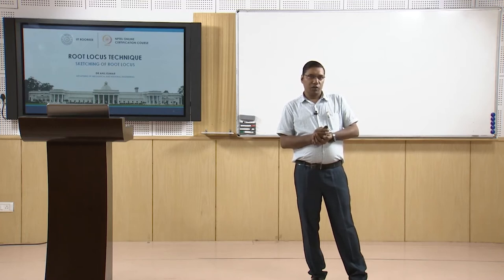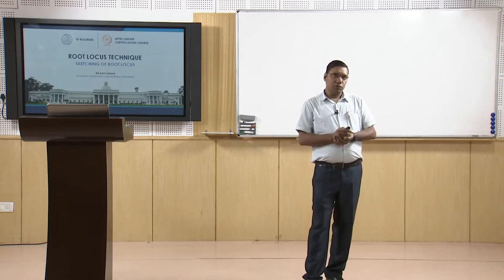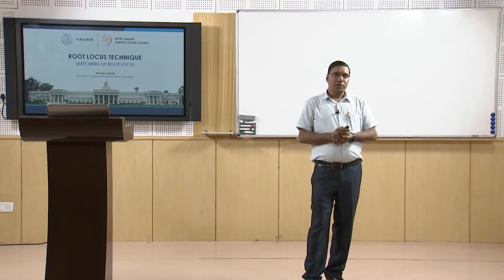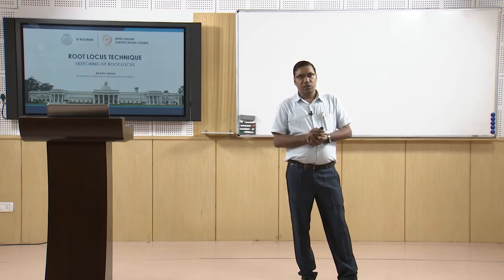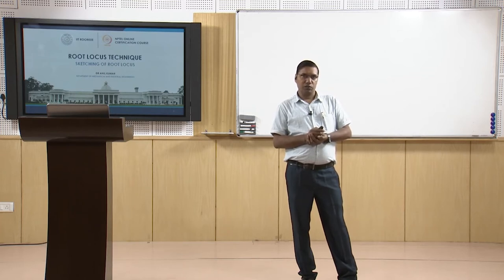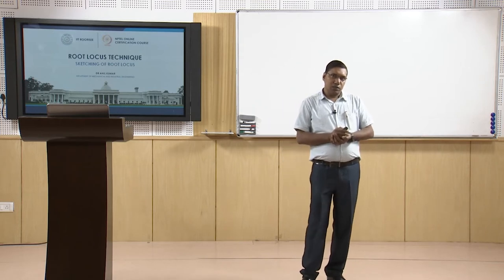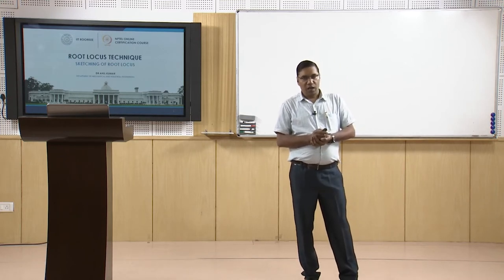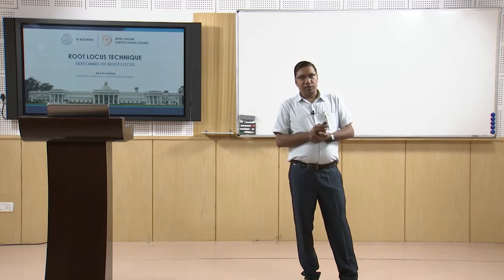Rule one: the number of branches of the root locus equals the number of closed-loop poles — one branch for each closed-loop pole. Rule two: the root locus is symmetrical about the real axis. Rule three: the root locus on the real axis lies to the left of an odd number of finite poles and zeros. Rule four: the root locus starts at the finite and infinite poles of G(s)H(s) and ends at the finite and infinite zeros of the open-loop transfer function.